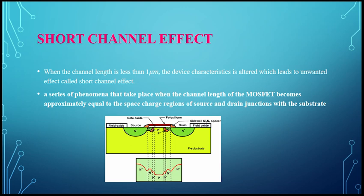This series of phenomena takes place when the channel length of the MOSFET becomes approximately equal to the space charge region of the source and drain junction in the substrate. The picture shows where the space charge region of the source and drain is equal to the drain junction.